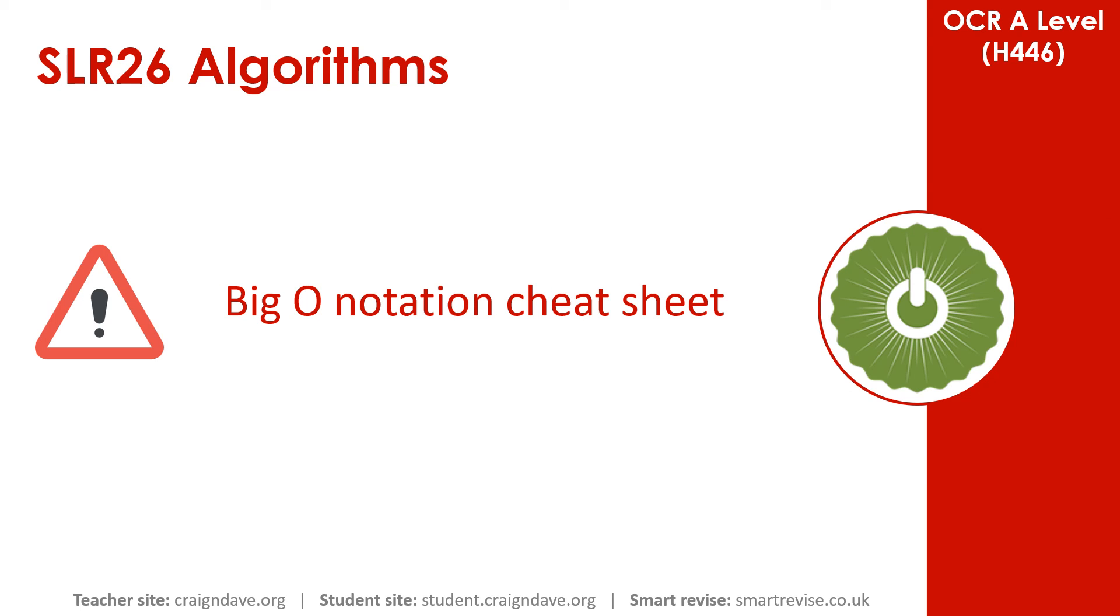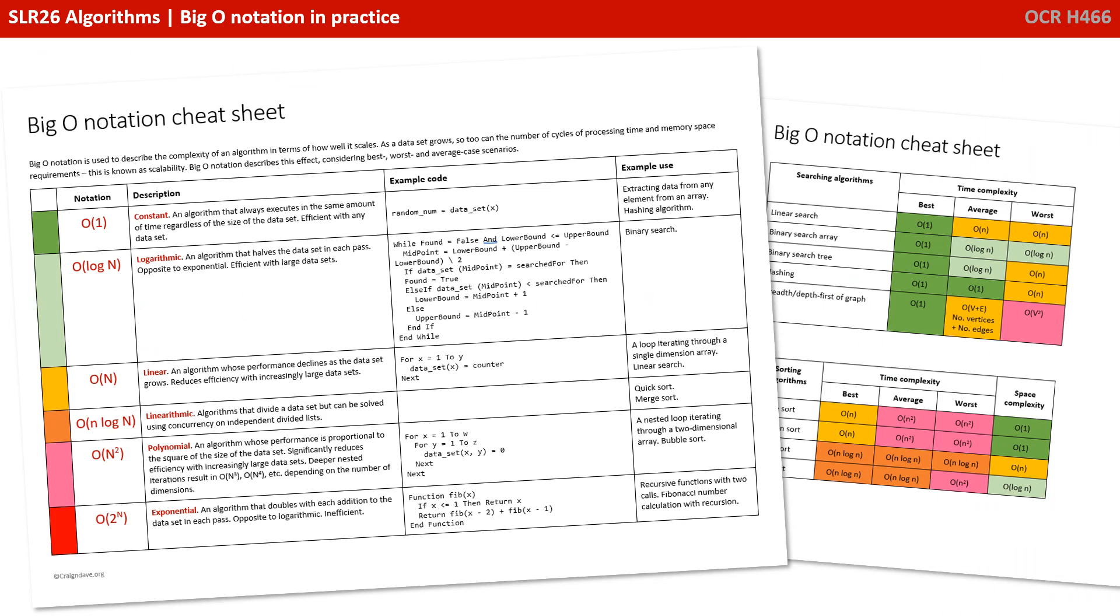So just before we leave you, we want to make you aware of our completely free big O notation cheat sheet. This is a two-sided sheet. It goes through all the various types of big O notation you need to know about, their descriptions, example codes and common uses, and on the back are the various best average and worst case tables that we've been using in these videos.